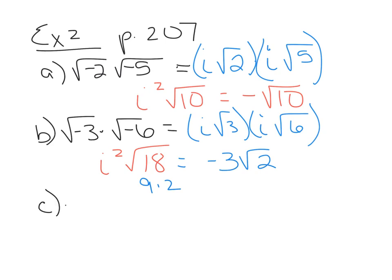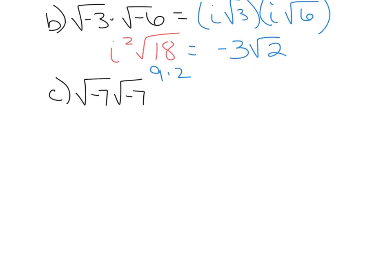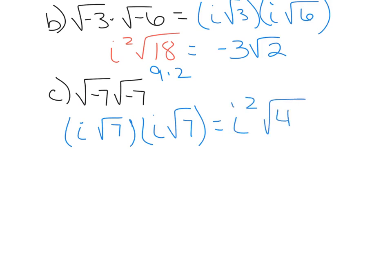Letter C says the square root of negative 7 times the square root of negative 7. When we simplify by taking the negative out, we get i times the square root of 7 times i times the square root of 7. Multiplying gives i squared on the outside and the square root of 49 on the inside, which simplifies to 7. i squared makes negative 1, and 7 times negative 1 gives us negative 7.